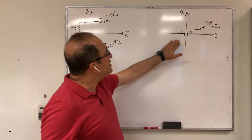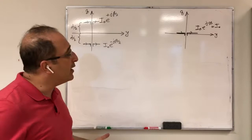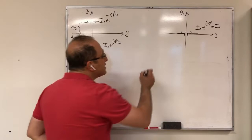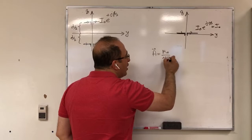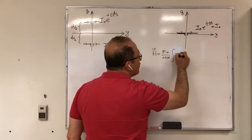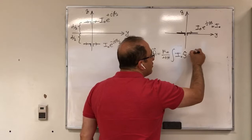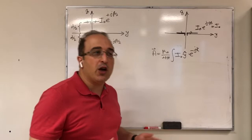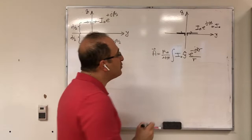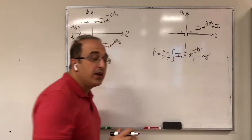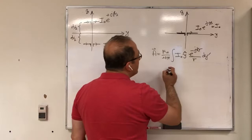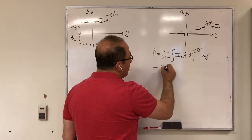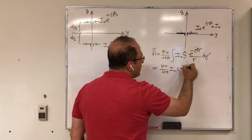Now I already know how to analyze this single element. The first step is to find the vector potential A. For an infinitesimal dipole oriented along ŷ, A = (μ₀/4π) · I₀ · e^{-jkr}/r · ŷ. Since the dipole is along y (instead of z as in previous lectures), A has only a ŷ component.